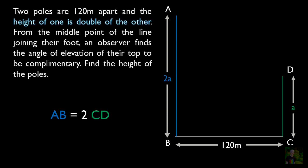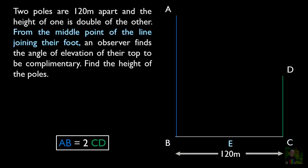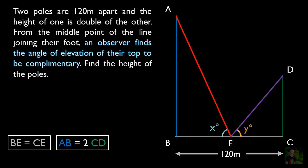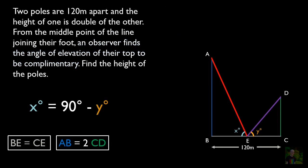The line joining their feet is BC, and the midpoint is E. Since E is the midpoint, BE equals CE. From midpoint E, the observer finds the angles of elevation to be complementary. If the angles are X and Y, then X plus Y equals 90 degrees, meaning X equals 90 minus Y. We will remember that and proceed to solve the question.